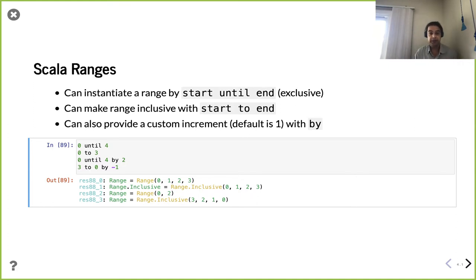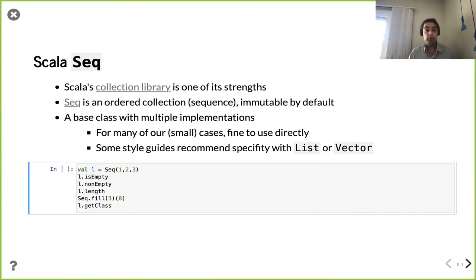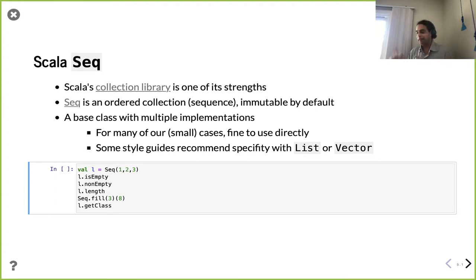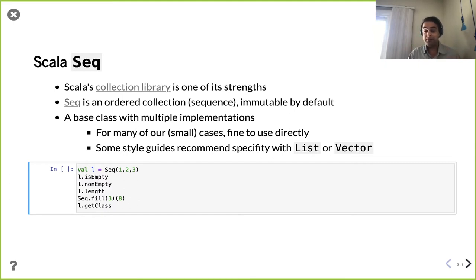Now we're able to define numeric ranges. Let's talk about collections. There are a lot of collections in Scala — they're constantly tweaking and changing them, but it's really a strength of the language. When you get going on a large project, you'll find yourself primarily using collections. The collection we're going to use most often is something called a Seq, which is short for sequence. It's an ordered collection of things — you've defined it in some particular order. Keeping track of order is helpful for us, because later we want a deterministic way of connecting to the same things consistently.